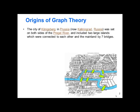This city in Prussia was interesting in the sense that it was divided by a river. There were two large islands, and there were lots of bridges. In fact, there were seven bridges that connected the different islands to different parts of the city.